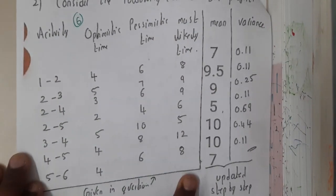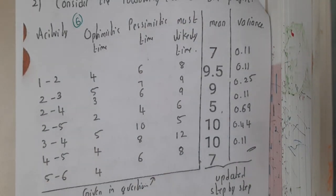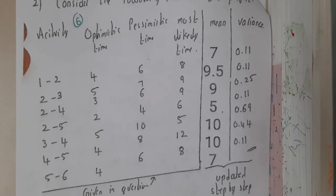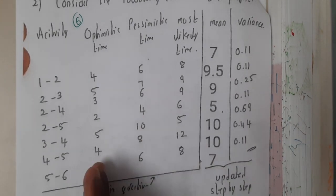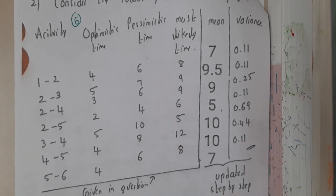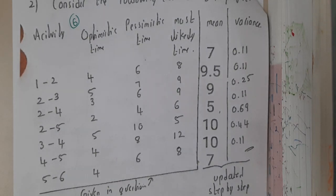That is the reason why please remember the formulas instead of remembering any kind of shortcut. The formula is optimistic time plus pessimistic time plus 4 into most likely time. Remember that most likely time should be multiplied with 4, that's the major thing, and whole divided by 6.